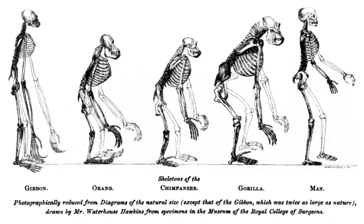In 1790, the philosopher Immanuel Kant wrote in Kritik der Urteilskraft that the similarity of animal forms implies a common original type, and thus a common parent.